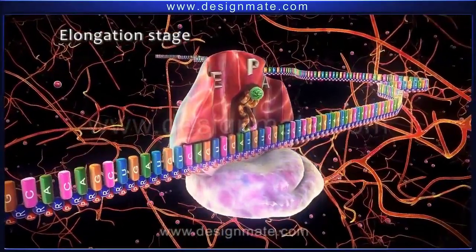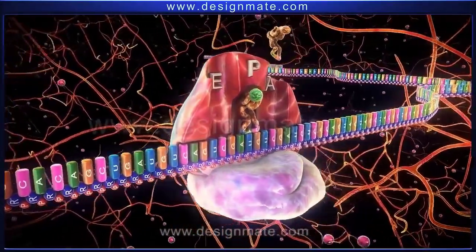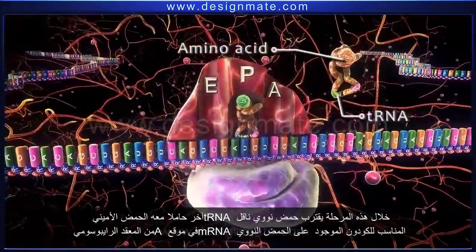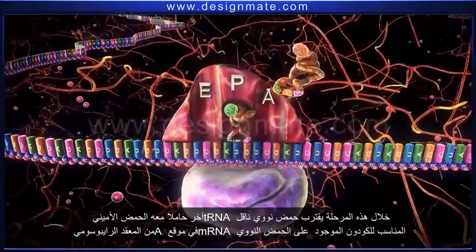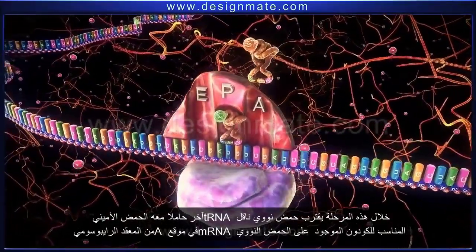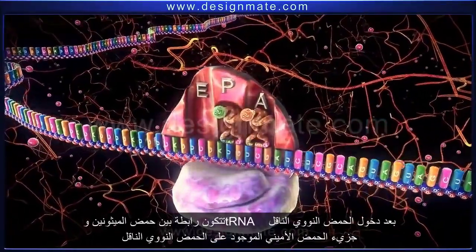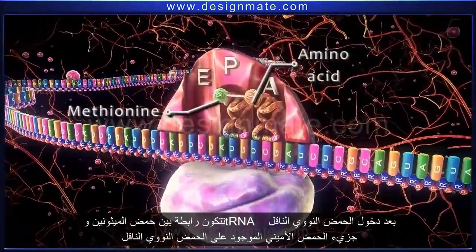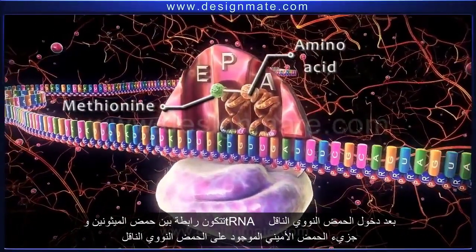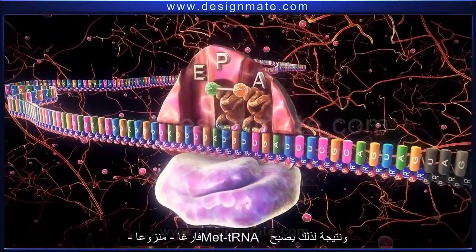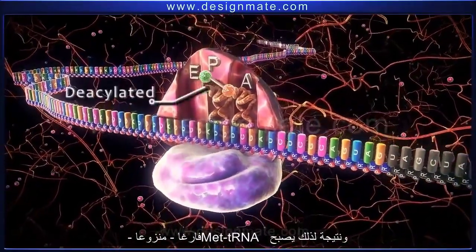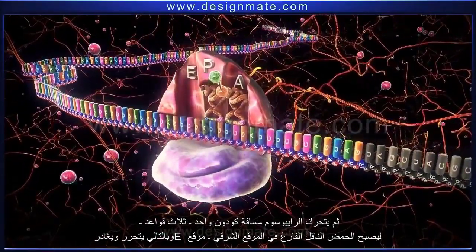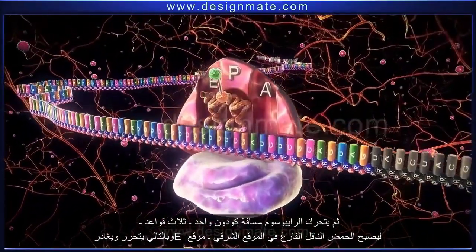This is followed by the elongation stage. During this stage, another tRNA carrying a molecule of an amino acid approaches the mRNA-ribosome complex and fits into the A site. Then a bond is formed between methionine and the amino acid molecule on the tRNA. As a result, met-tRNA becomes deacylated. The ribosome then advances a distance of one codon.